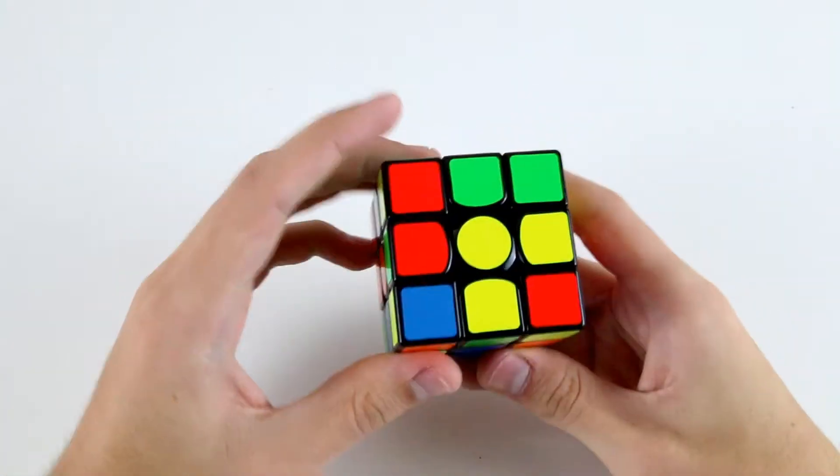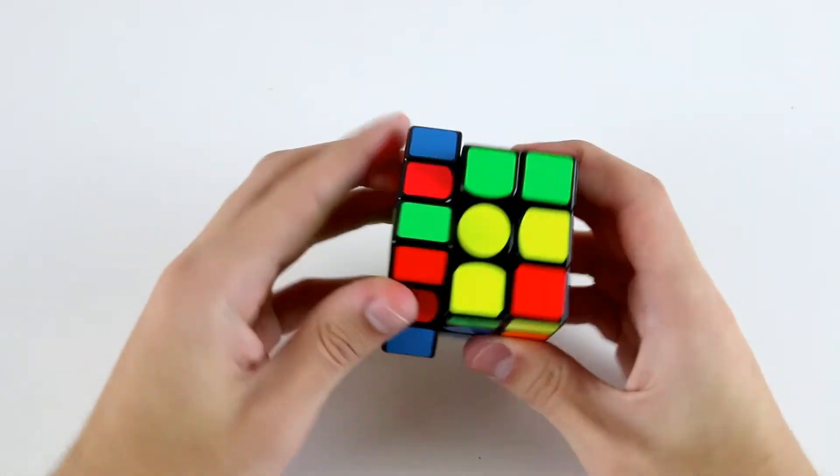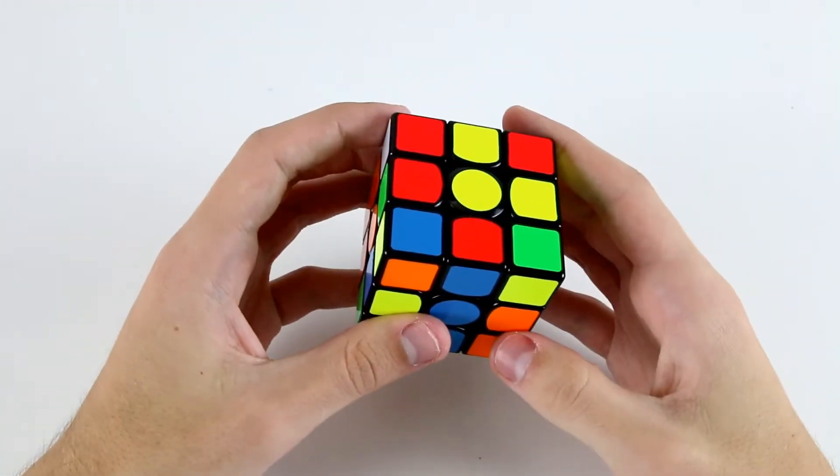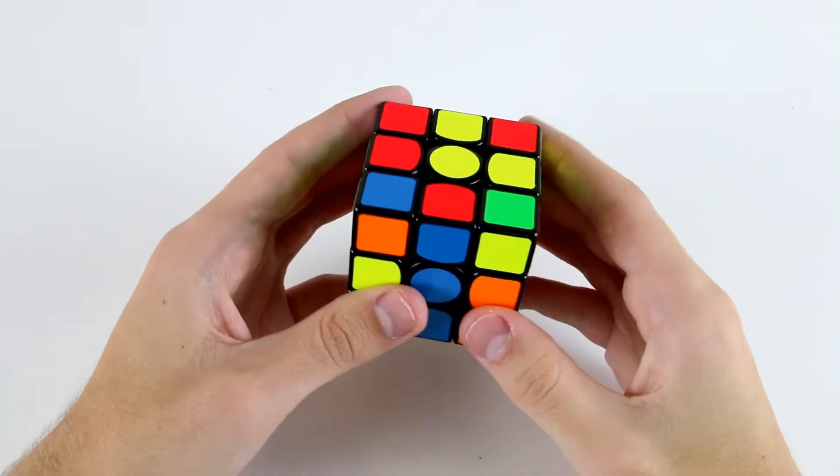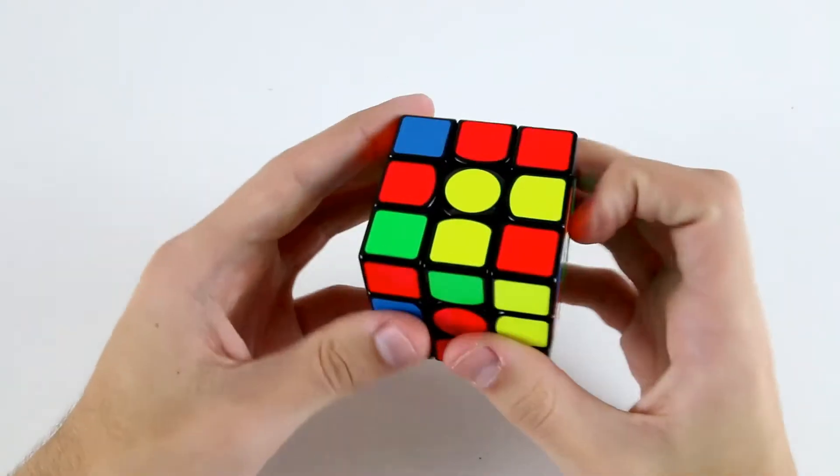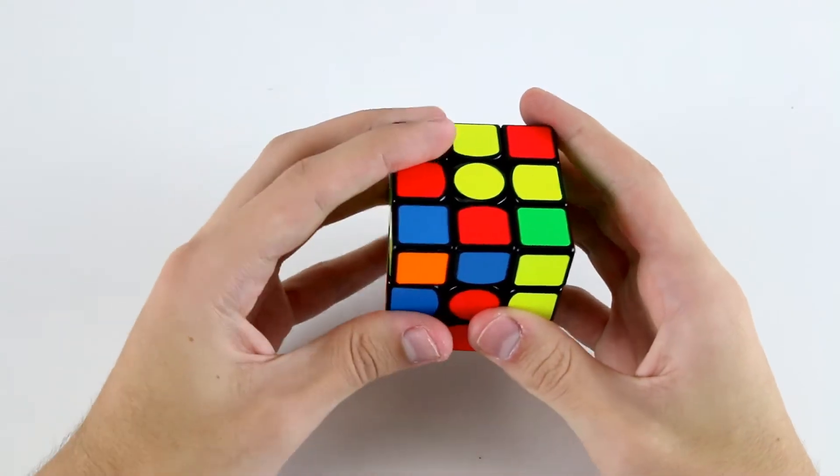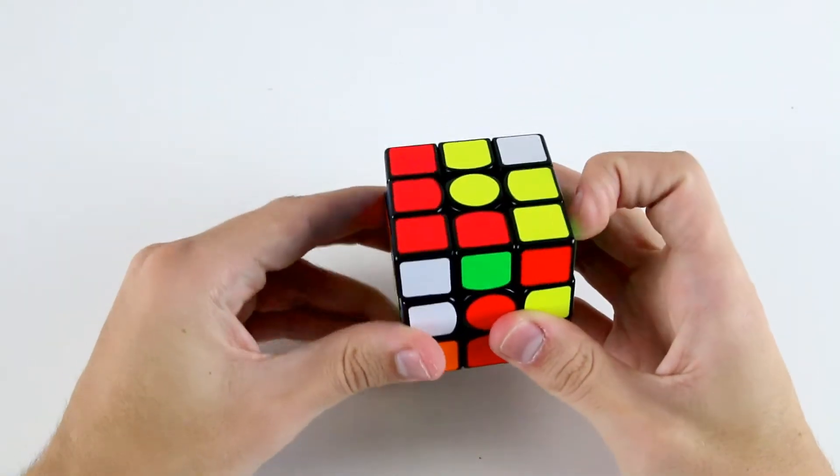Now I've got this easy F2L pair in the back left here, so I'm going to insert them like that. Then probably what I would do with these two, so perhaps what I would do is rotate like this and then insert them like so.